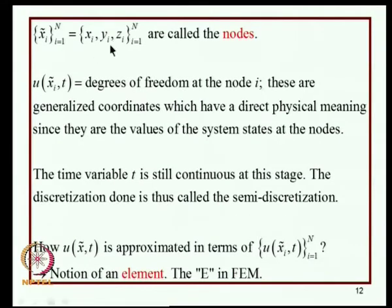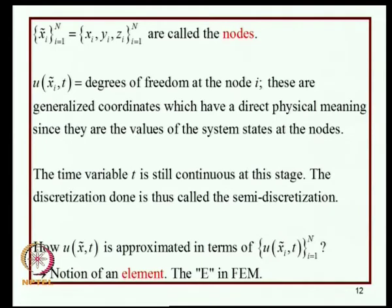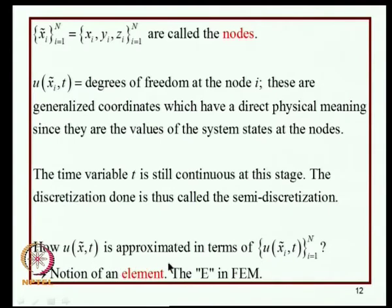The points where field variables are taken as unknowns are called nodes; the values of field variables at nodes are degrees of freedom. These generalized coordinates typically have direct physical meaning because the field variable itself has physical meaning. The question of how U(X̃, T) is approximated in terms of degrees of freedom leads to the notion of 'element' - the E in finite element method. We partition domain omega into R subdomains omega_I, whose union covers the domain with no intersection between sets; omega_I is known as the i-th element.